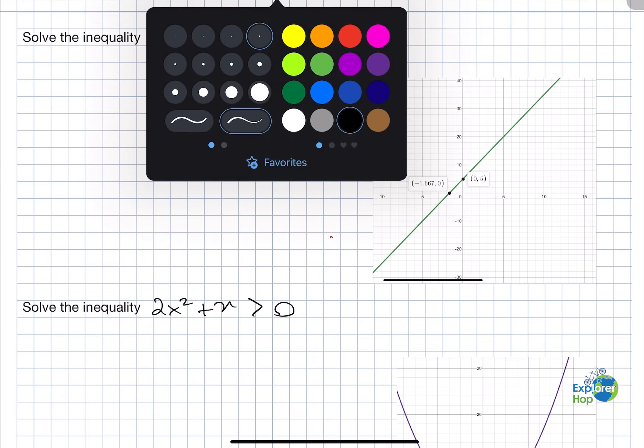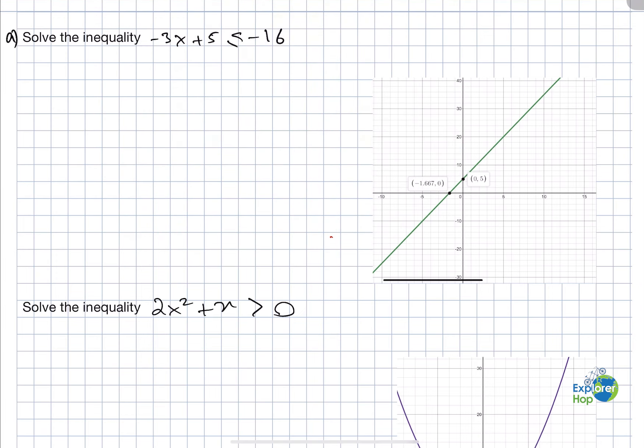We have two parts, part A and part B. Let's look at part A. Solve the inequality -3x + 5 ≤ -16.